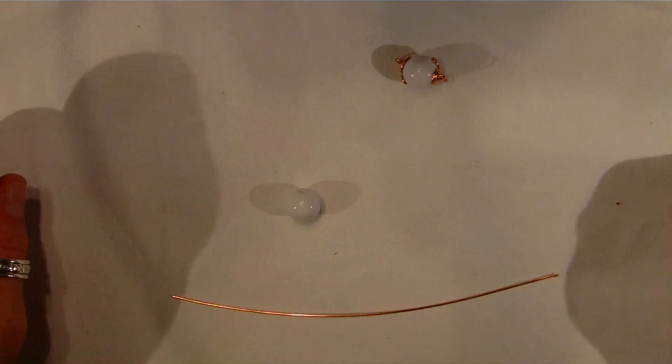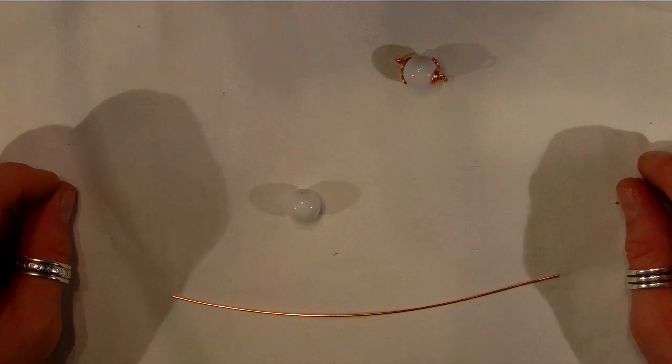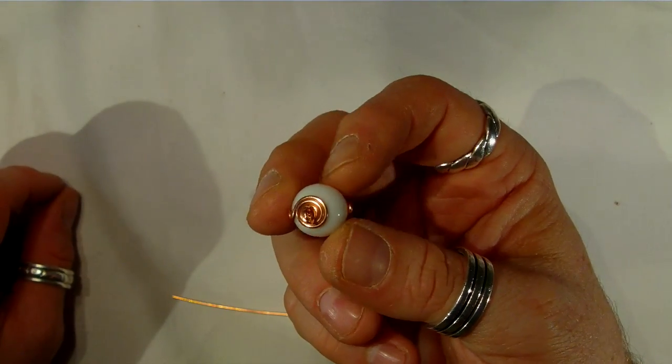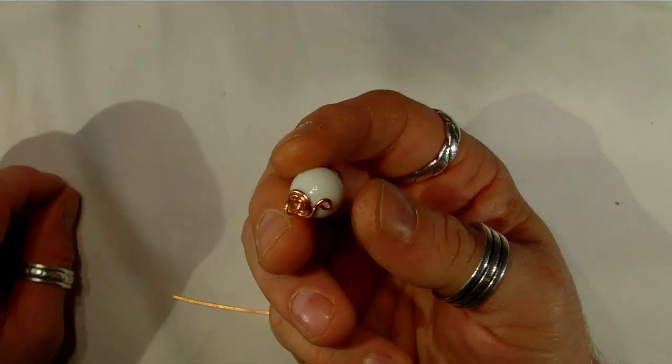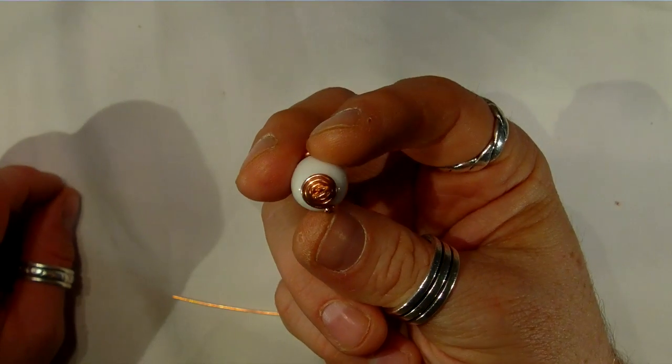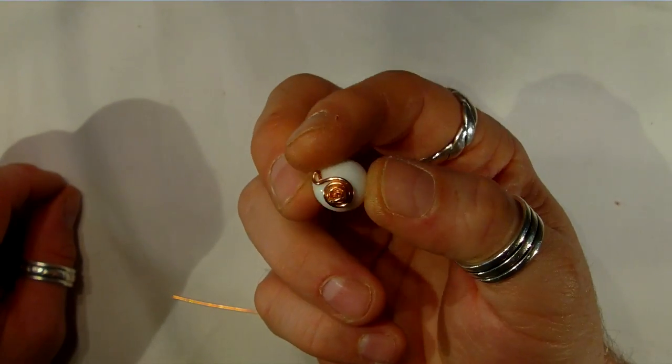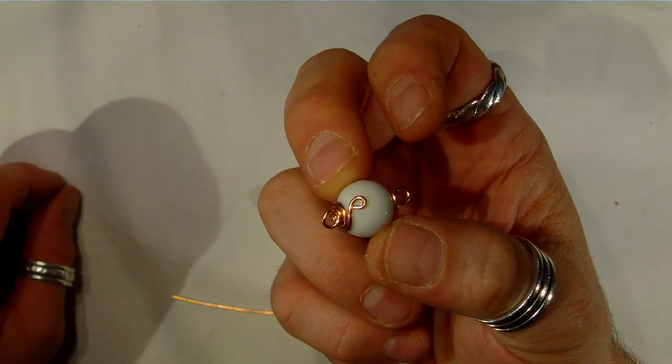Hello and welcome to Lonely Soldiers Designs tutorial number two. I'm going to show you how to make a beaded wire wrap eye loop bead cap with a little flourish at the end.